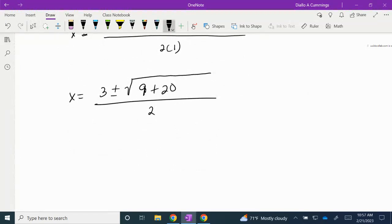So now we're going to further simplify the inside of our radical. We have x = (3 ± √29) / 2.